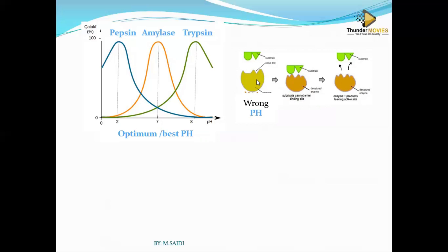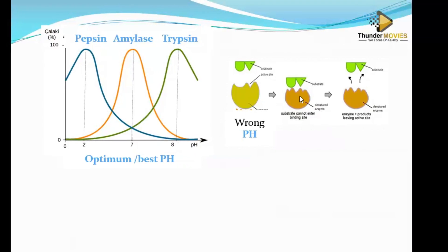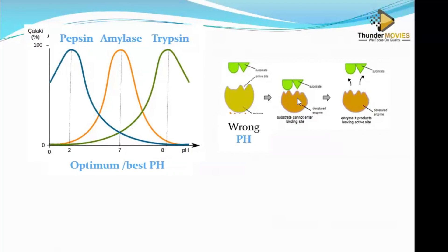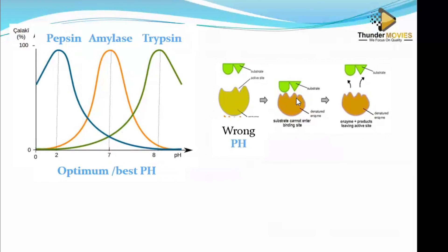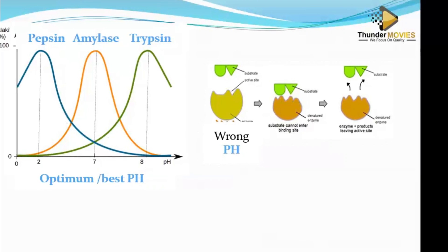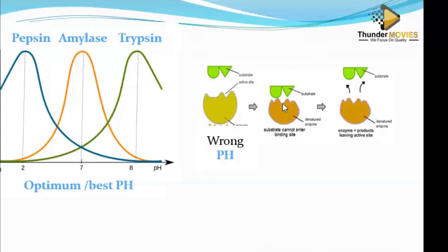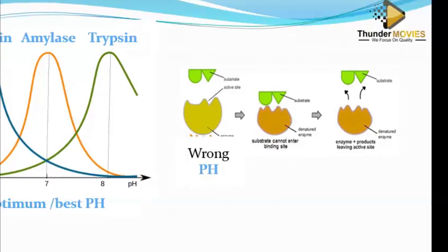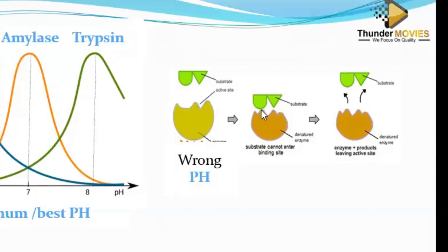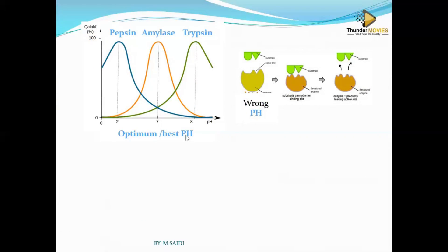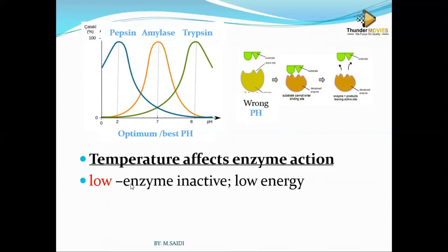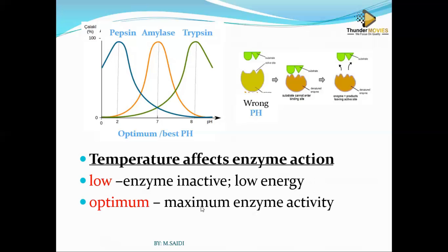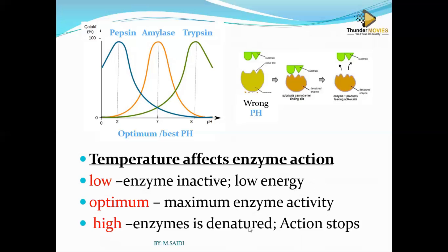What happens when the pH is wrong? For example, if you put pepsin in a pH of 8, it will denature the enzyme. The substrate cannot fit snugly — you have destroyed the lock, so the key cannot enter. The substrate cannot fit into the active site snugly. Looking at the shape here, the shape is different, so the reaction will not take place, which is why activity drops to zero. Regarding temperature: at low temperature, the enzyme is inactive and the rate is low due to low energy. At optimum temperature, maximum activity takes place.